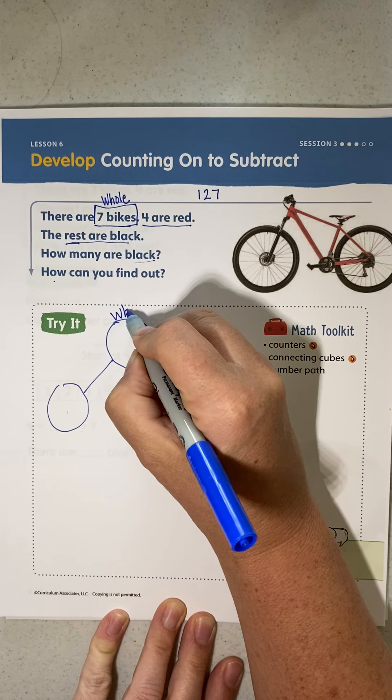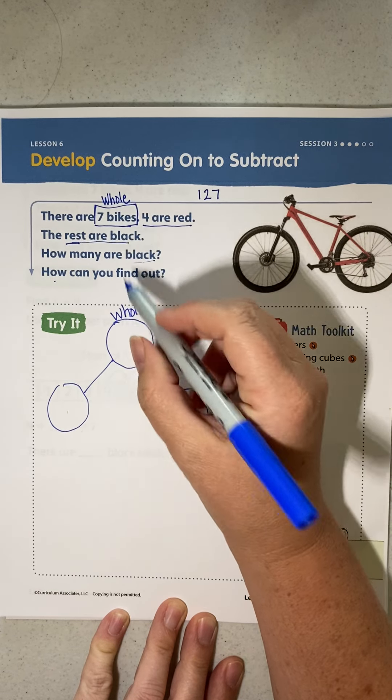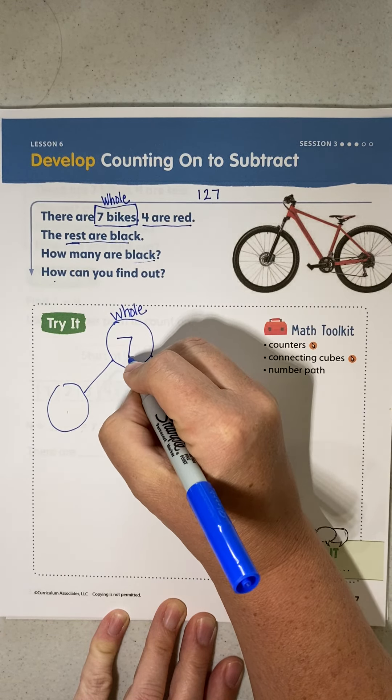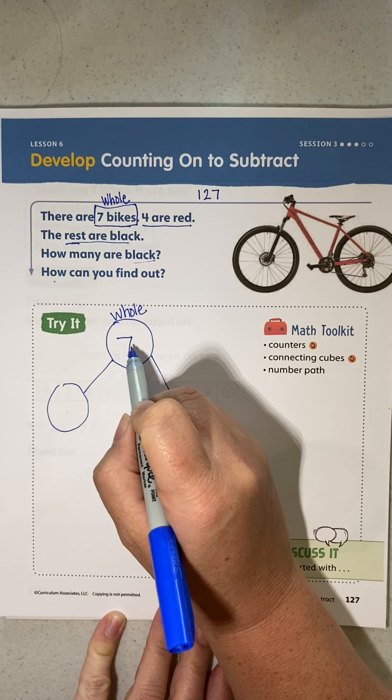If I already know what my whole is - it says there are seven bikes, right? Four out of those seven are red.